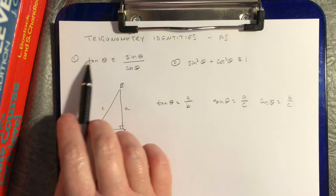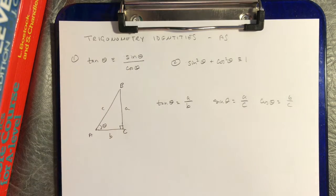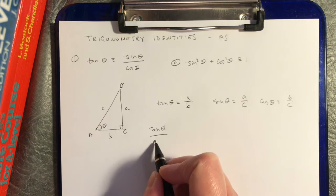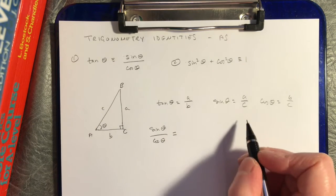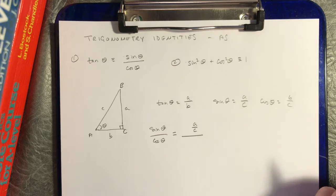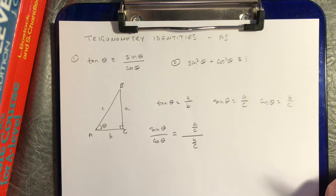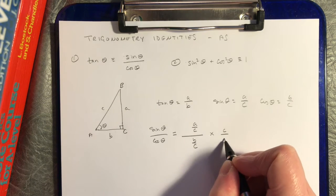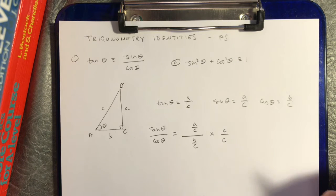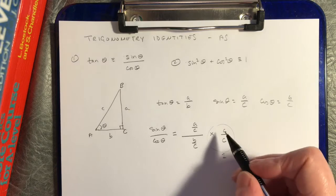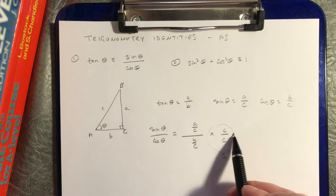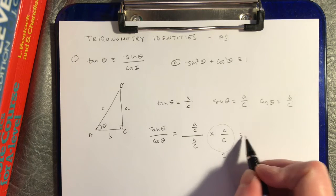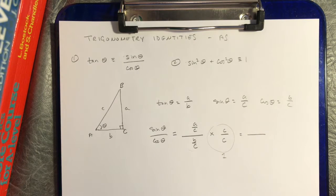The claim is that tangent is equivalent to sine divided by cosine, so let's look at sine divided by cosine with our fractions. Sine divided by cosine of theta is the fraction A over C divided by the fraction B over C. One really nice way to simplify that compound fraction is to multiply the top and the bottom by C — you're multiplying by the number one since C over C equals one. When you multiply fractions, you multiply numerators and multiply denominators.